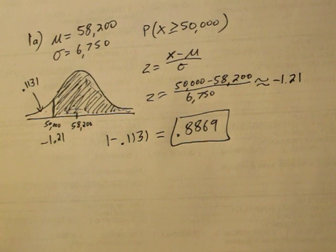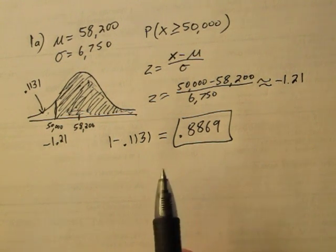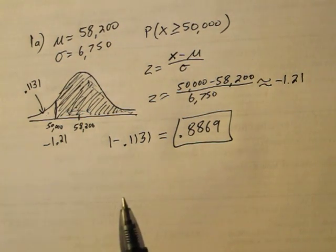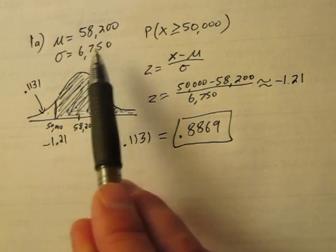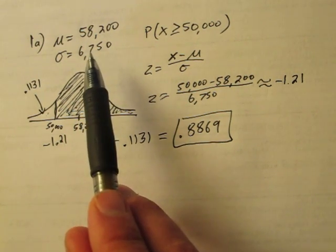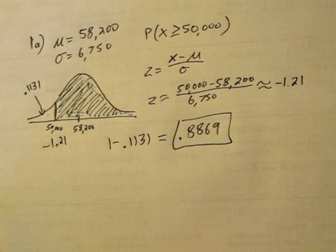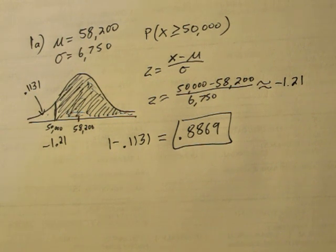Part B is a little bit different. In Part B, we're looking at a random sample of 100 teachers. So instead of using this standard deviation here, we actually have to modify our standard deviation to represent a sample mean.